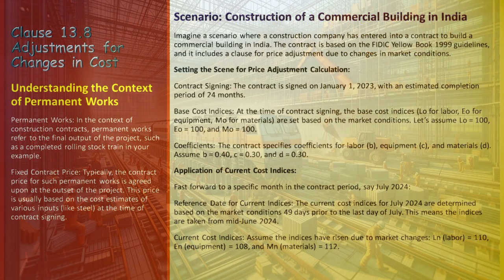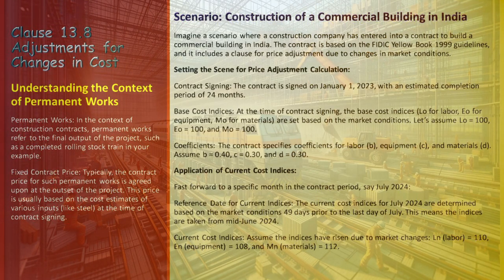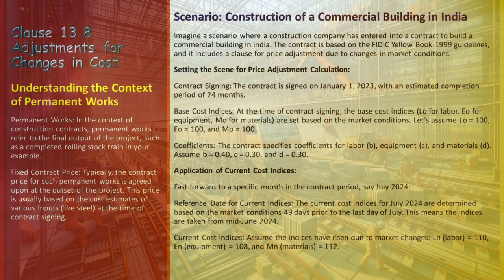The contract specifies coefficients: B (Labor) = 0.40, C (Equipment) = 0.30, and D (Materials) = 0.30. For the price adjustment in July 2024, the current cost indices are based on market conditions 49 days before the end of July, around mid-June 2024. Assuming there has been a market rise, the current indices are: LN (Labor) = 110, N (Equipment) = 108, and MN (Materials) = 112.